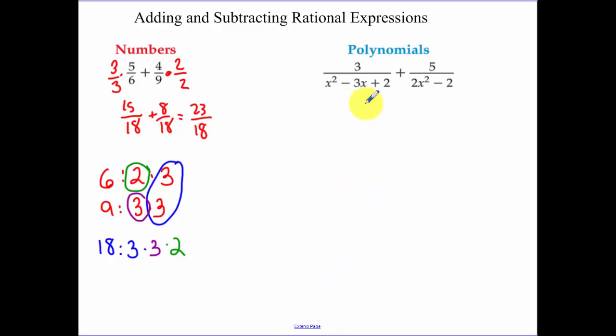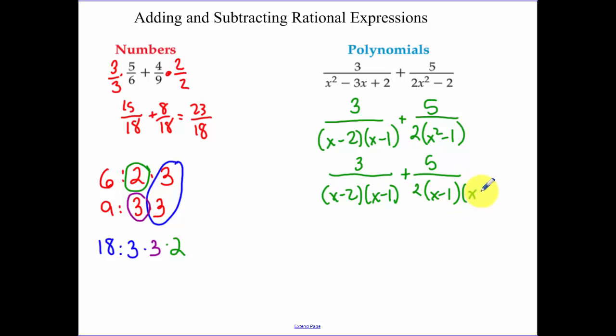Now looking at a polynomial, first we need to factor those denominators. So x minus 2, x minus 1. When we factor out a 2, we have x squared minus 1. Now this factors even more. The x squared minus 1 is going to factor to x minus 1, x plus 1.